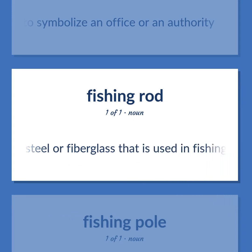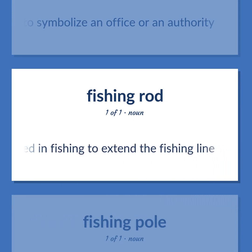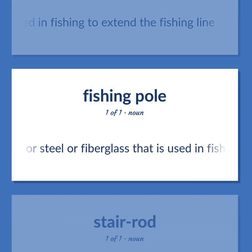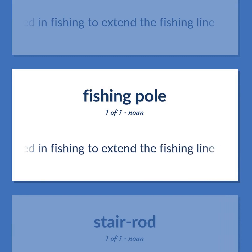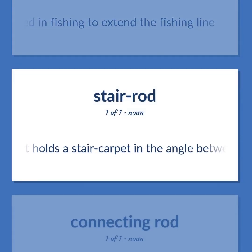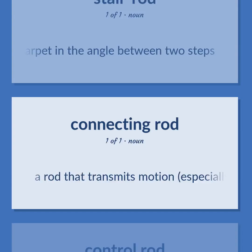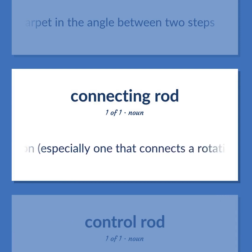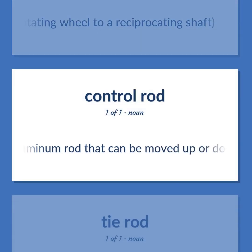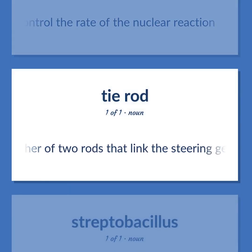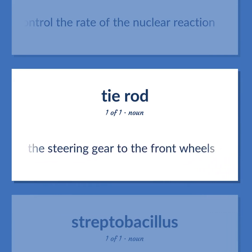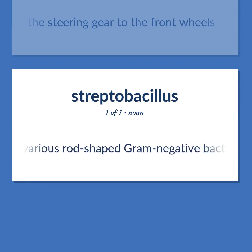A rod of wood or steel or fiberglass that is used in fishing to extend the fishing line. A rod that holds a stair carpet in the angle between two steps. A rod that transmits motion, especially one that connects a rotating wheel to a reciprocating shaft. A steel or aluminum rod that can be moved up or down to control the rate of a nuclear reaction. Either of two rods that link the steering gear to the front wheels. Any of various rod-shaped gram-negative bacteria.